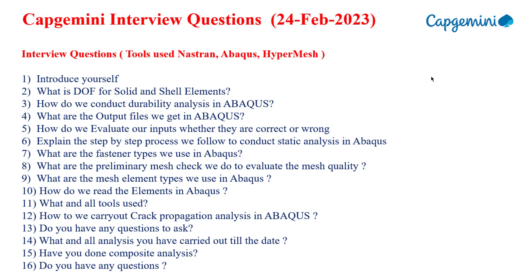When it comes to element types, understand the naming convention for each element. The next question is: how do we read element names in Abaqus? — a very important question. They will also ask what pre-processing and post-processing tools you have used. The next question is: how do we carry out crack propagation in Abaqus? Since durability analysis was mentioned, they asked about crack propagation as well, so try to carry out a few analyses on this. They will also ask all the analyses you have carried out to date — try to recall each one. Finally, they asked: have you done composite analysis? If yes, say yes; if not, say no.